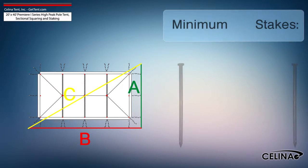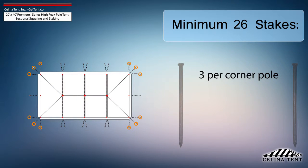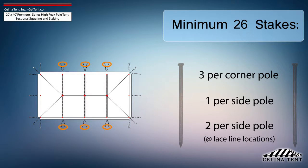Celina recommends that a 20-foot by 40-foot Premier 1 Series High Peak Pole Tent receives a minimum of 26 stakes. Three stakes for each corner pole, one stake for each side pole, and two stakes for each side pole at lace-line locations.